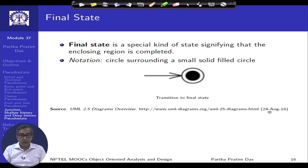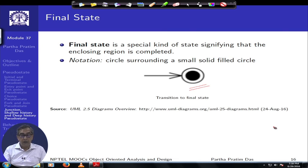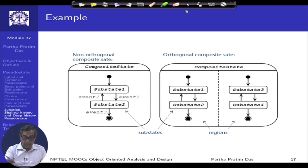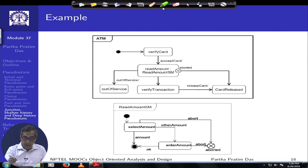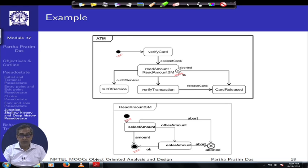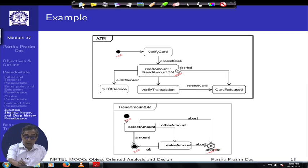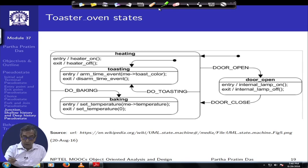Finally, there is a pseudo state called the final state, which you have already seen in a number of places. Once you reach the final state, the state machine diagram has come to a completion and there are no further state transitions. Some examples show different pseudo states: the initial pseudo state, the final pseudo state, and an exit pseudo state which takes you out of the submachine diagram. This is illustrated using a toaster oven example.